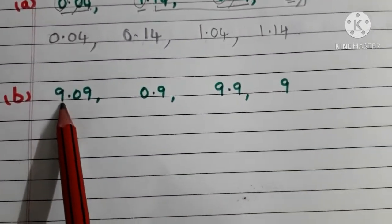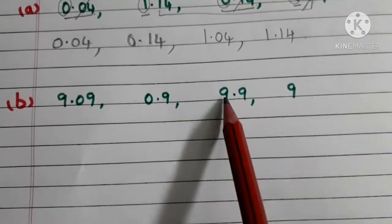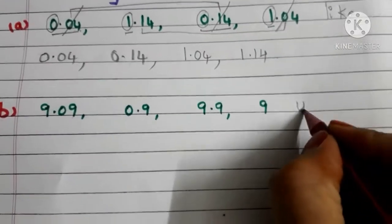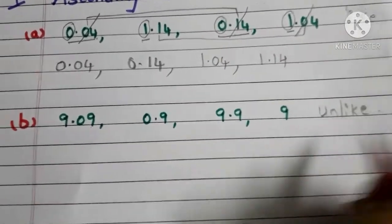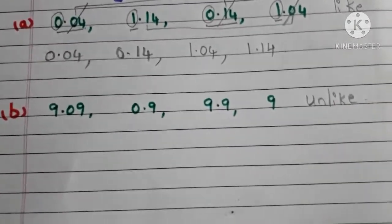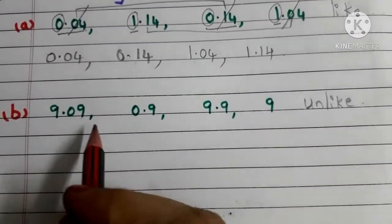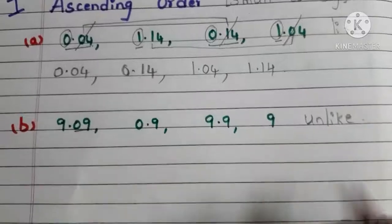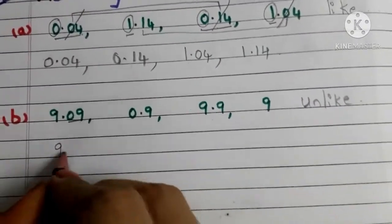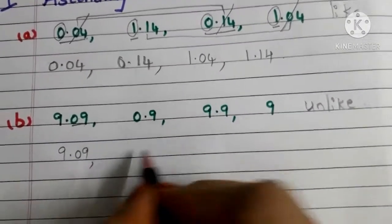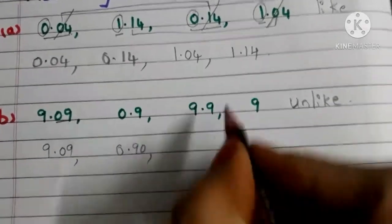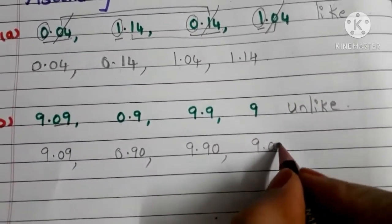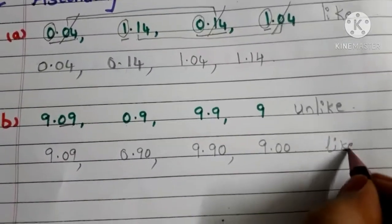Our next example is 9.09, 0.9, 9.9, and 9. By observing these decimals we can easily say that these are unlike decimals. First we have to convert unlike decimals into like decimals. Check which decimal number has the highest number of decimal places. Here 9.09 has 2 decimal places. So copy down 9.09, write 0.9 as 0.90, write 9.9 as 9.90, and write 9 as 9.00. Now these decimals are like decimals.